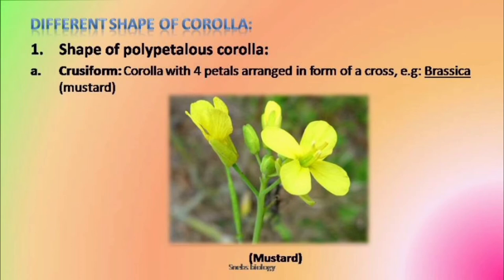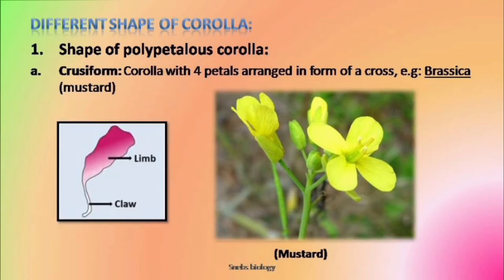A Greek cross is nothing but a cross sign, so petals are always arranged in the form of this Greek cross. Every petal has these two parts — the claw and the limb. When we see the flower of Brassica, only the limb-like broader part is visible to us; the claw is inside the tubular structure. Example of this is Brassicaceae family members.